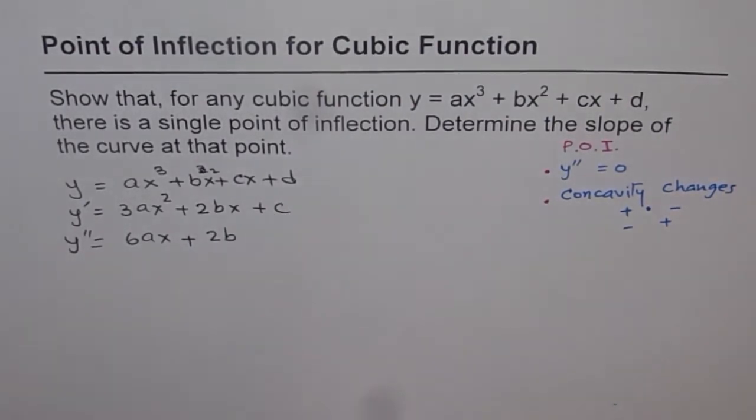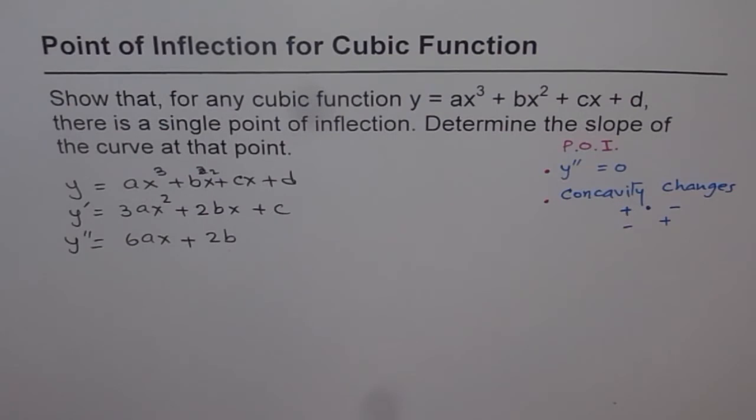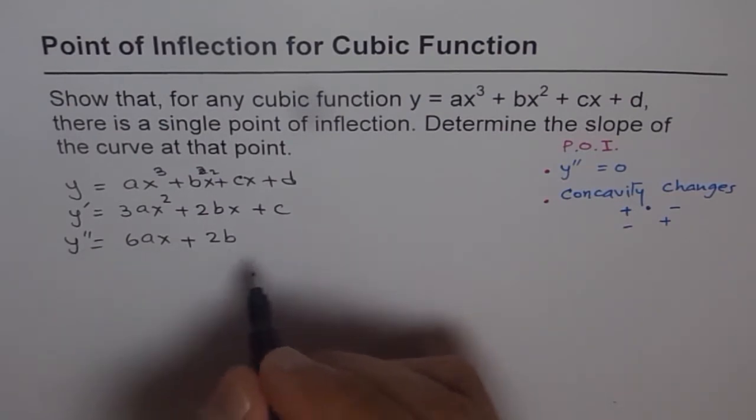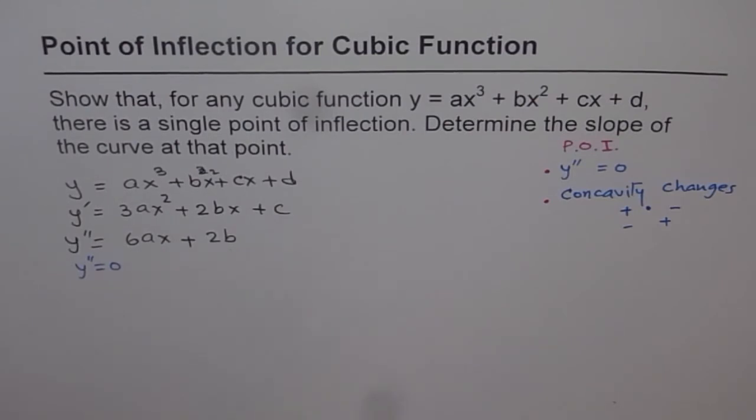And y double dash is equals to 6ax plus 2b. Now this is a linear equation. In this linear equation, when will it be zero?